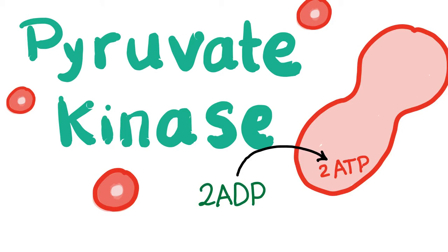One of the causes of extravascular hemolysis due to an intracorpuscular problem is pyruvate kinase deficiency. But what is pyruvate kinase? What's that enzyme? That's the topic of today's video, and this is Medicosis Perfectionalis.